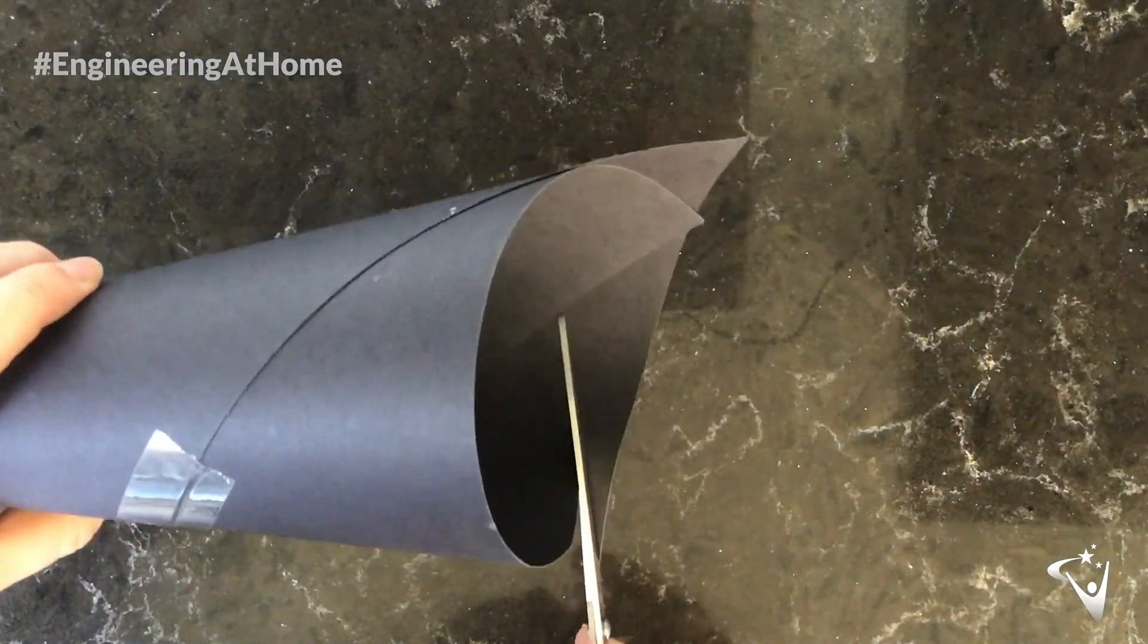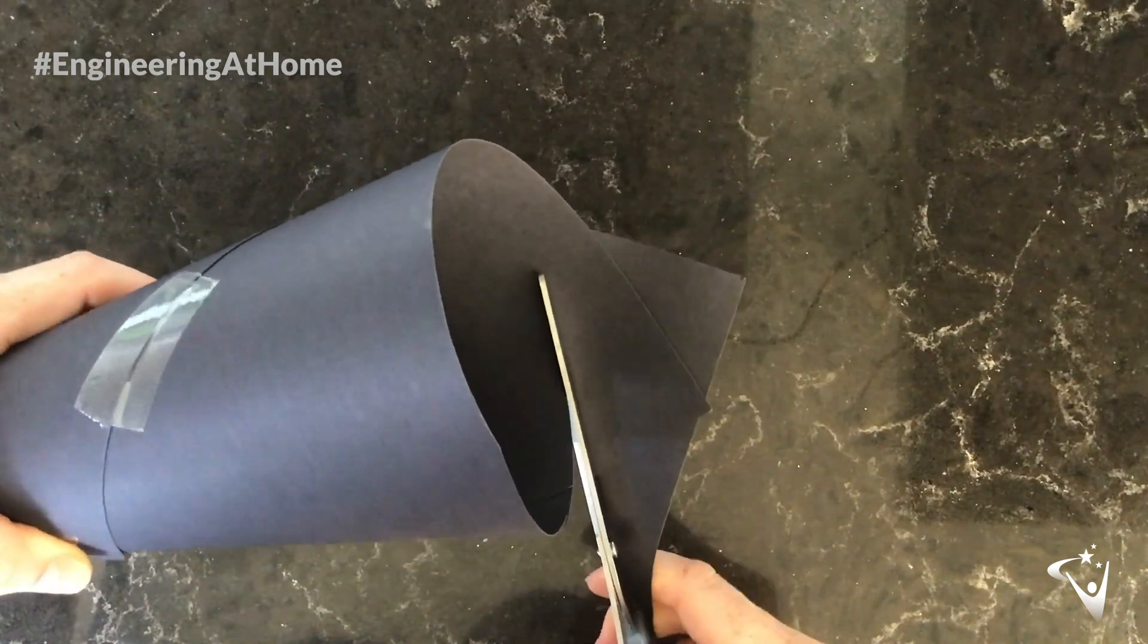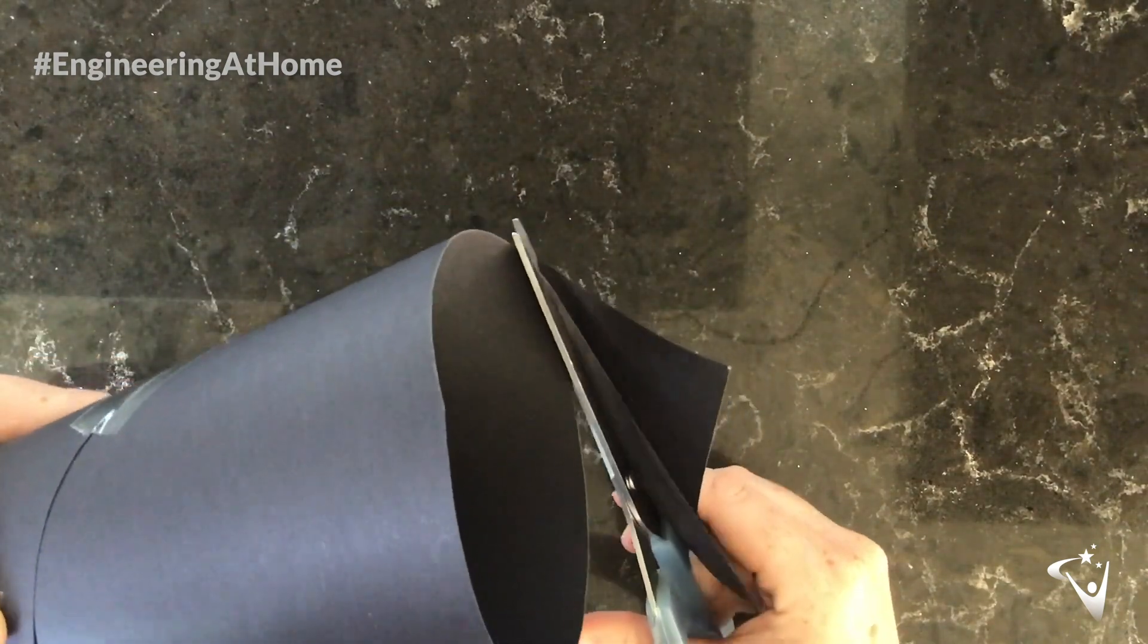The tower needs to be freestanding, so just trim along the bottom so you've got a flat edge and make sure it stands up by itself.